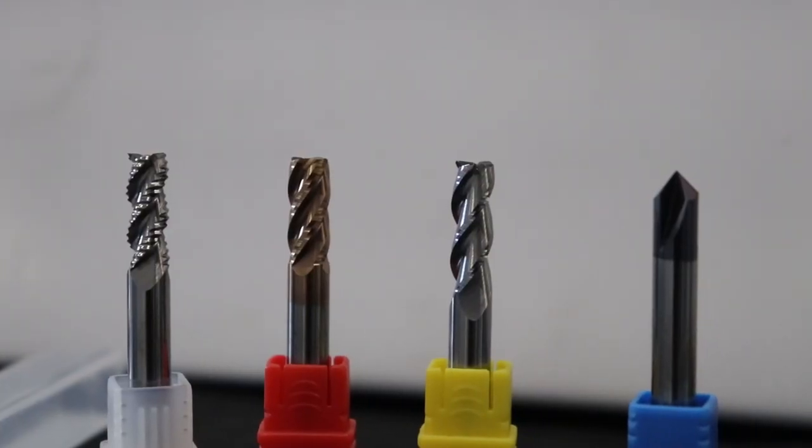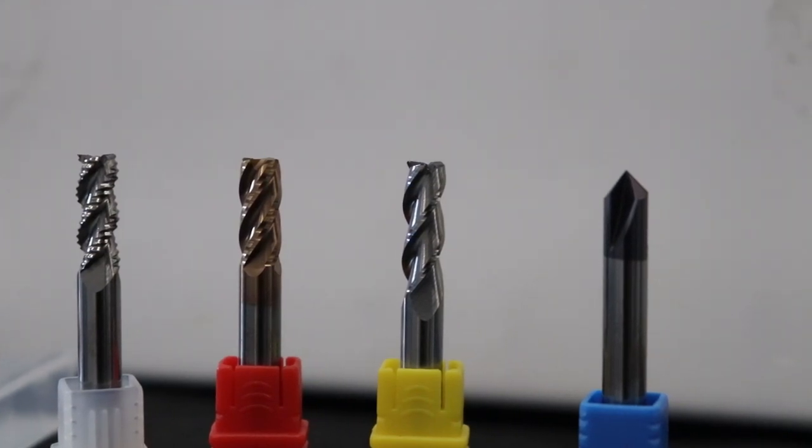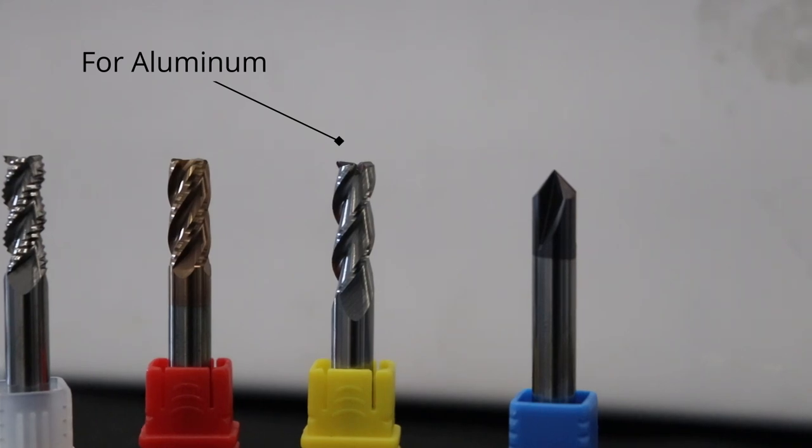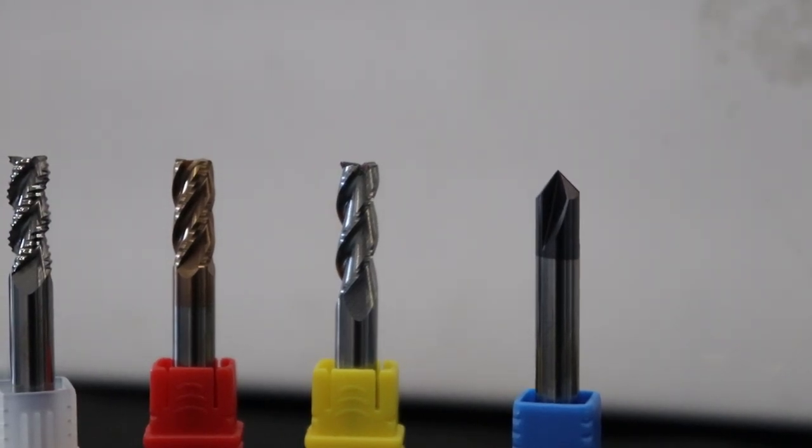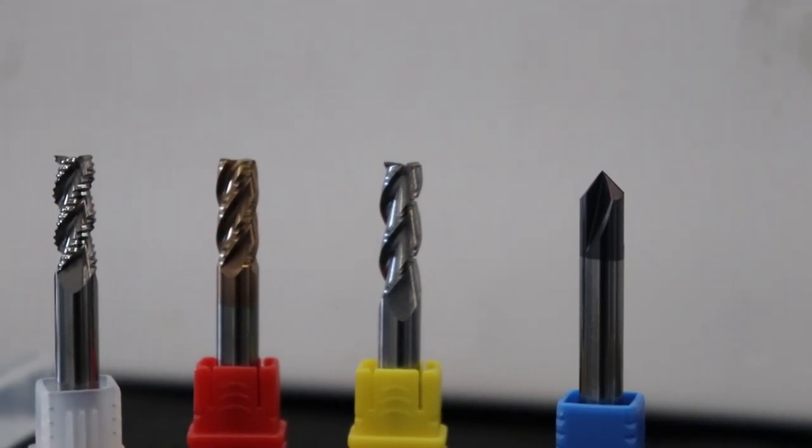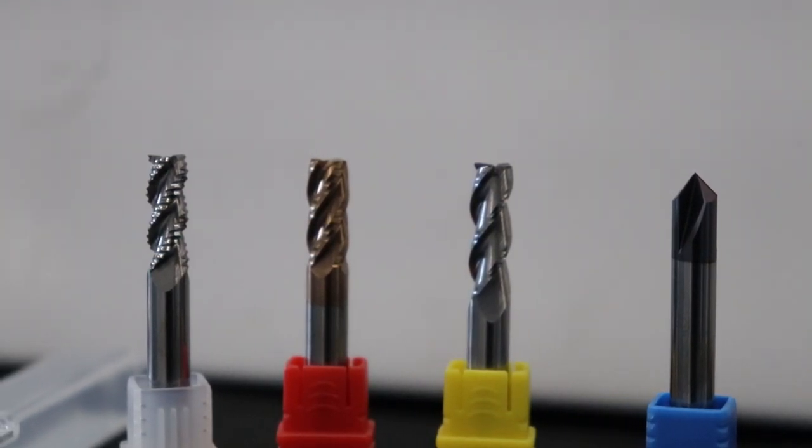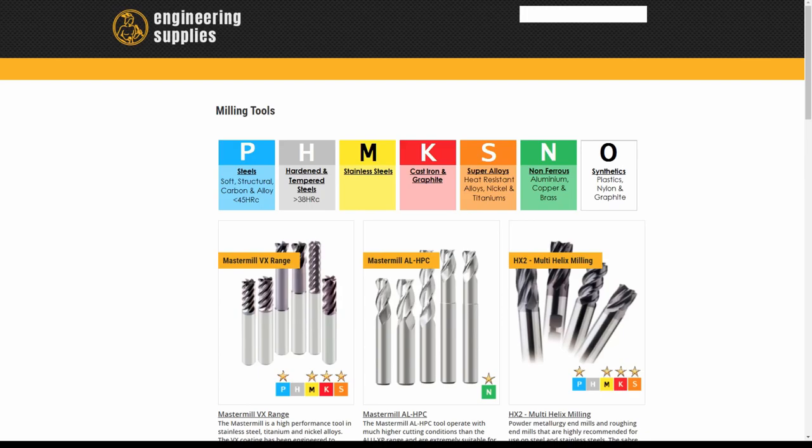If you're cutting soft metals like aluminum and other non-ferrous metals, then you want to buy a tool that's suited specifically for cutting non-ferrous, and maybe even with a surface finish that reduces friction. And if you're cutting harder materials like steel, you need to look for an endmill specifically designed for cutting steels of that type.